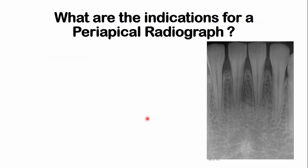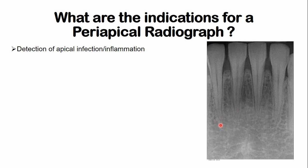What are the indications for a periapical radiograph? Periapical radiographs are used for the detection of apical infection and inflammation. For example, if there is any localized infection or inflammation in a given area, then the periapical radiograph is indicated.